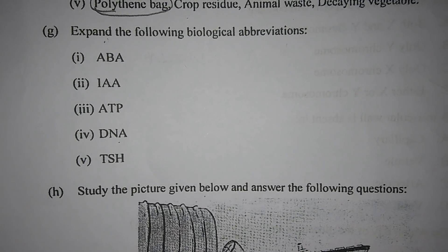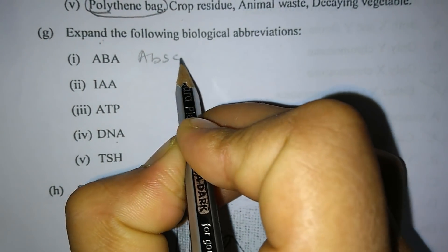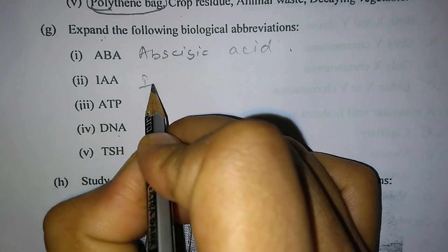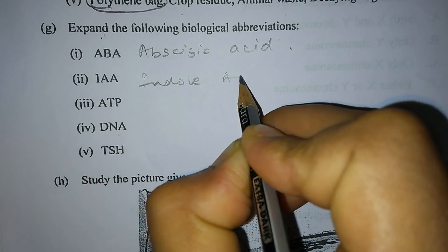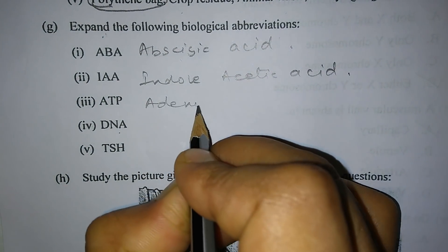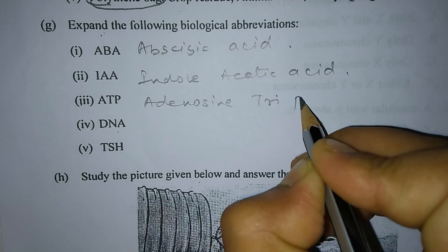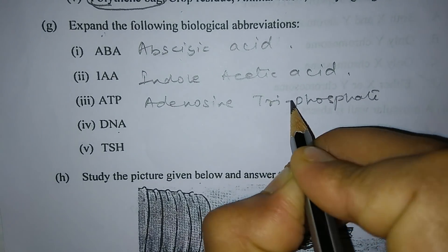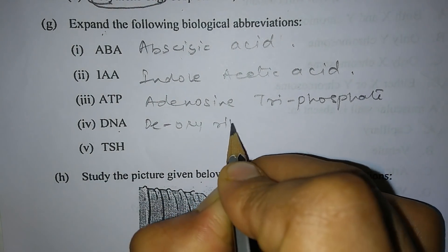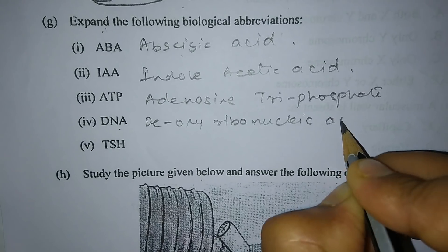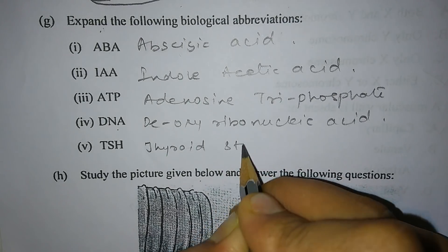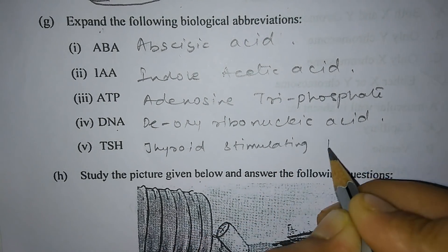Question 1g: Expand the following biological abbreviations. Number 1 — ABA: abscisic acid. Number 2 — IAA: indole acetic acid. Number 3 — ATP: adenosine triphosphate. Number 4 — DNA: deoxyribonucleic acid. Number 5 — TSH: thyroid stimulating hormone.